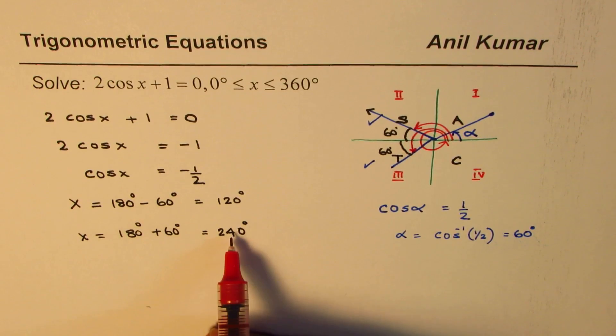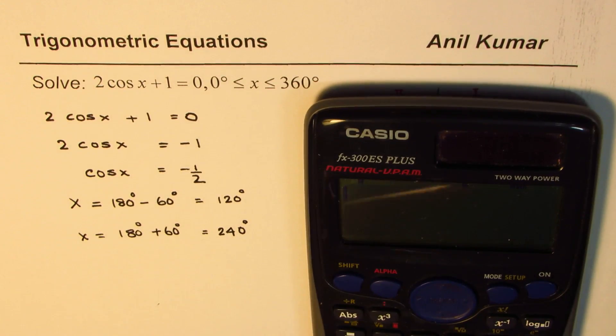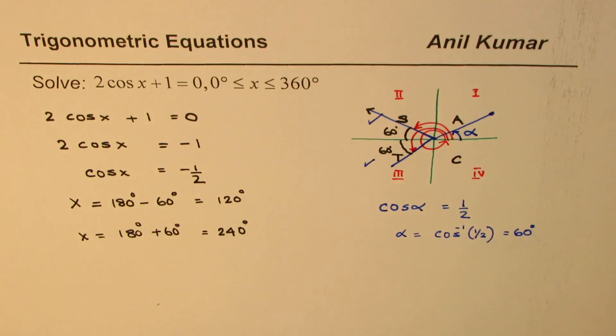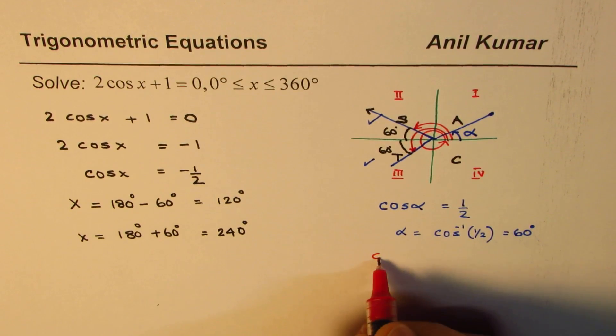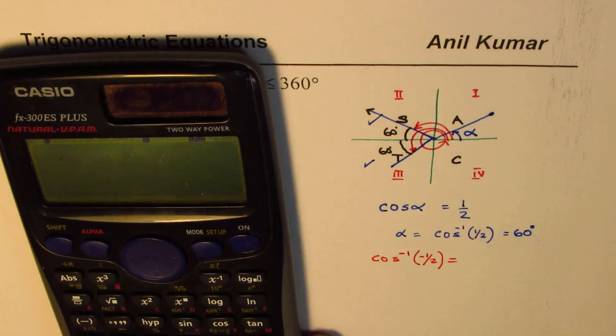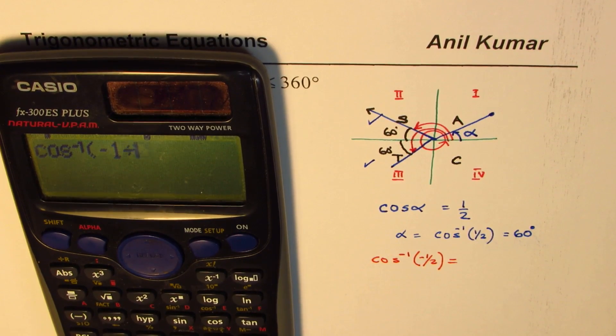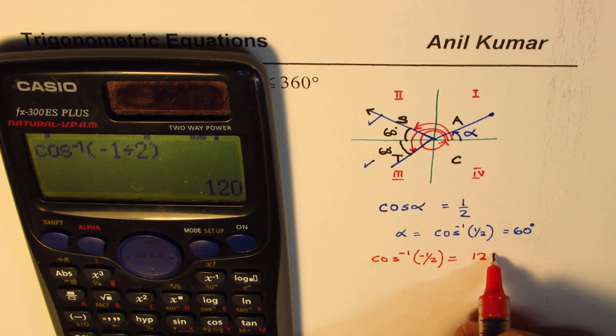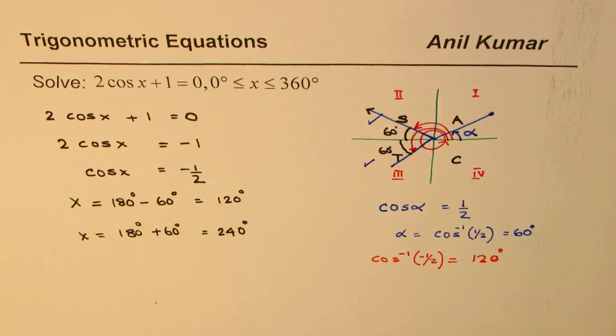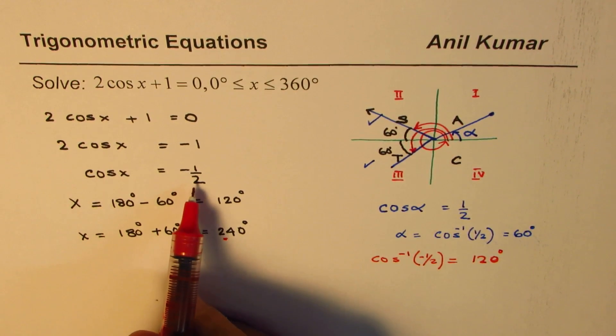If we do not follow this method and we try to get direct answer, that is to say, let me do that also. From here, if we try to get, let us say, cos inverse of minus half, let us see what we get. Cos inverse of minus half. Shift cos inverse minus 1 divided by 2 bracket close equals to. We get one solution only which is 120 degrees. We miss out on the second solution. So this technique of directly finding the answer doesn't work.